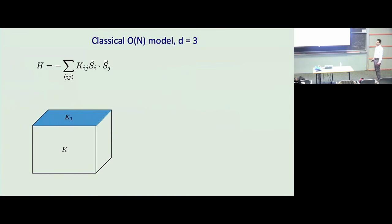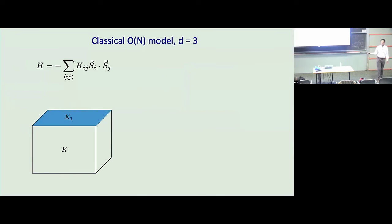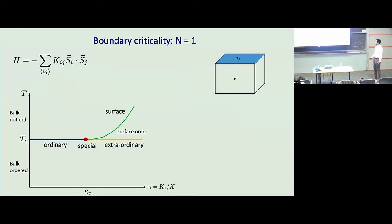I'm studying a classical Hamiltonian of classical spins — N-component unit vectors coupled with nearest-neighbor ferromagnetic coupling on a cubic lattice in the presence of a boundary. I allow the boundary coupling k₁ between spins to be different from the bulk coupling k. I want to study the phase diagram as a function of temperature and the ratio of surface to bulk coupling — a very old problem studied since the 1970s, but as I'll demonstrate, some very basic aspects of it have been missed.